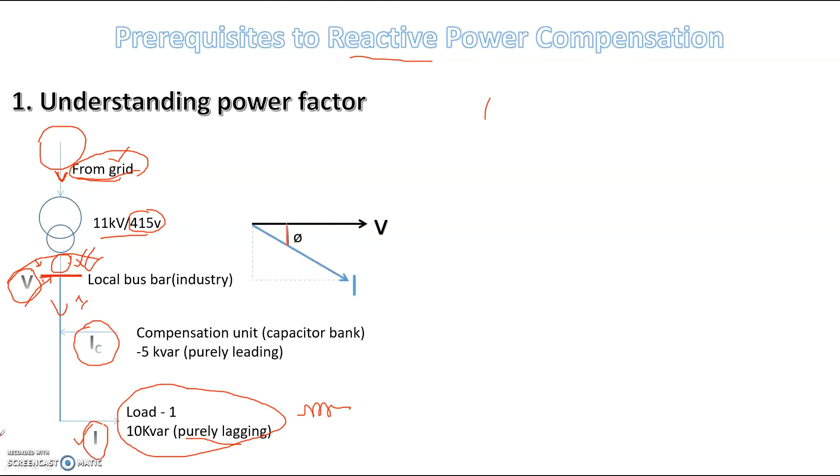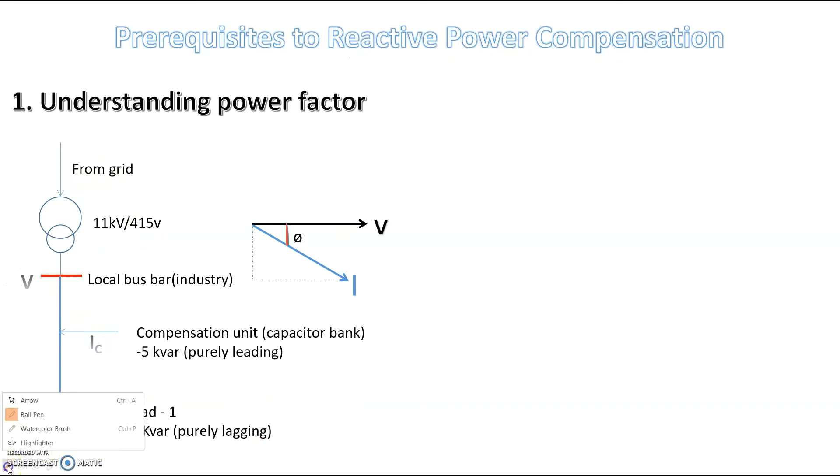So here you have to understand that we have this V and we have this I. We have the voltage V. You can see the voltage V here and the voltage V here. This is the bus bar voltage. This is the current I, the current which I am going to draw from the grid to the bus bar. And the angle between voltage and current is phi.